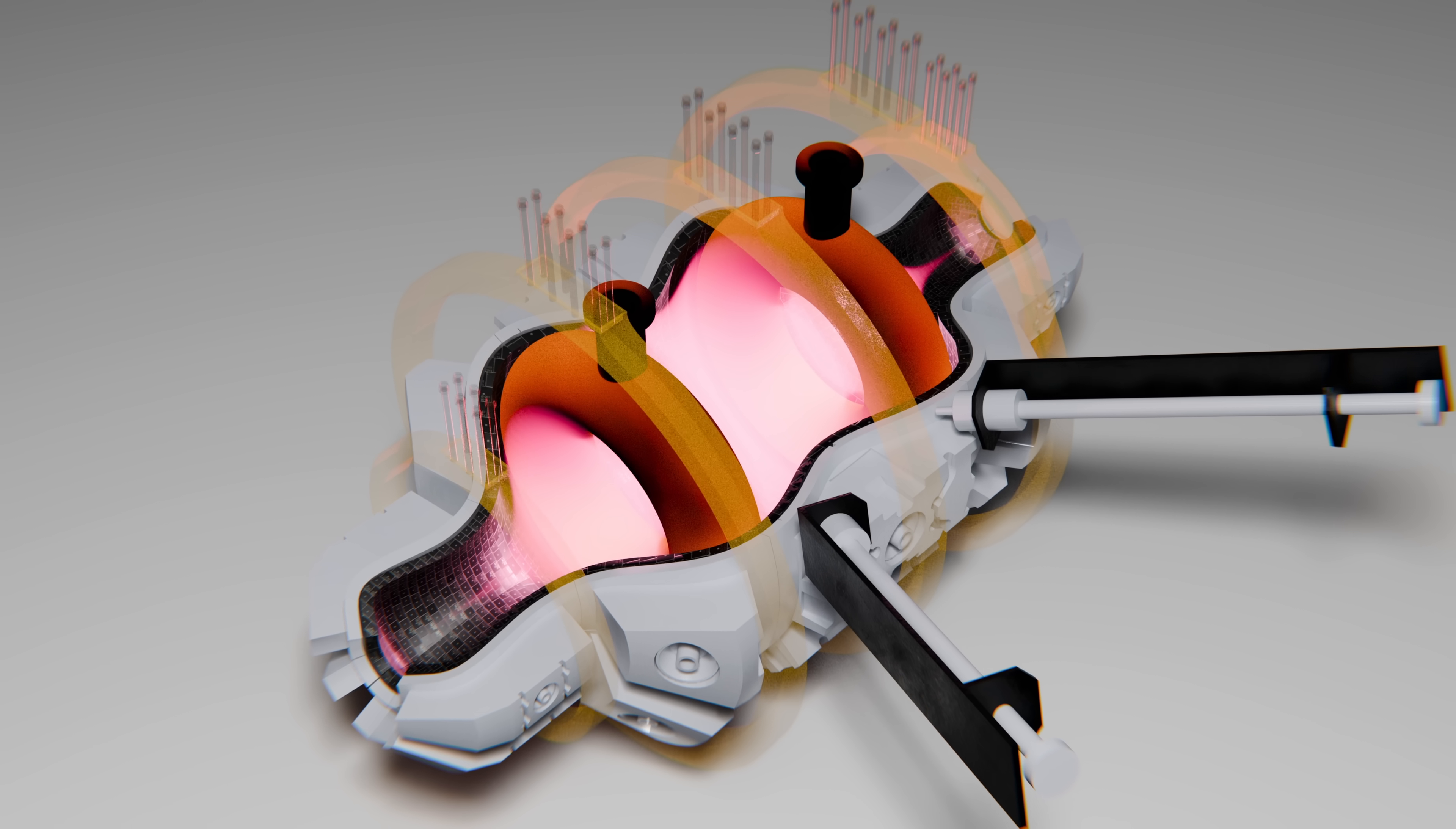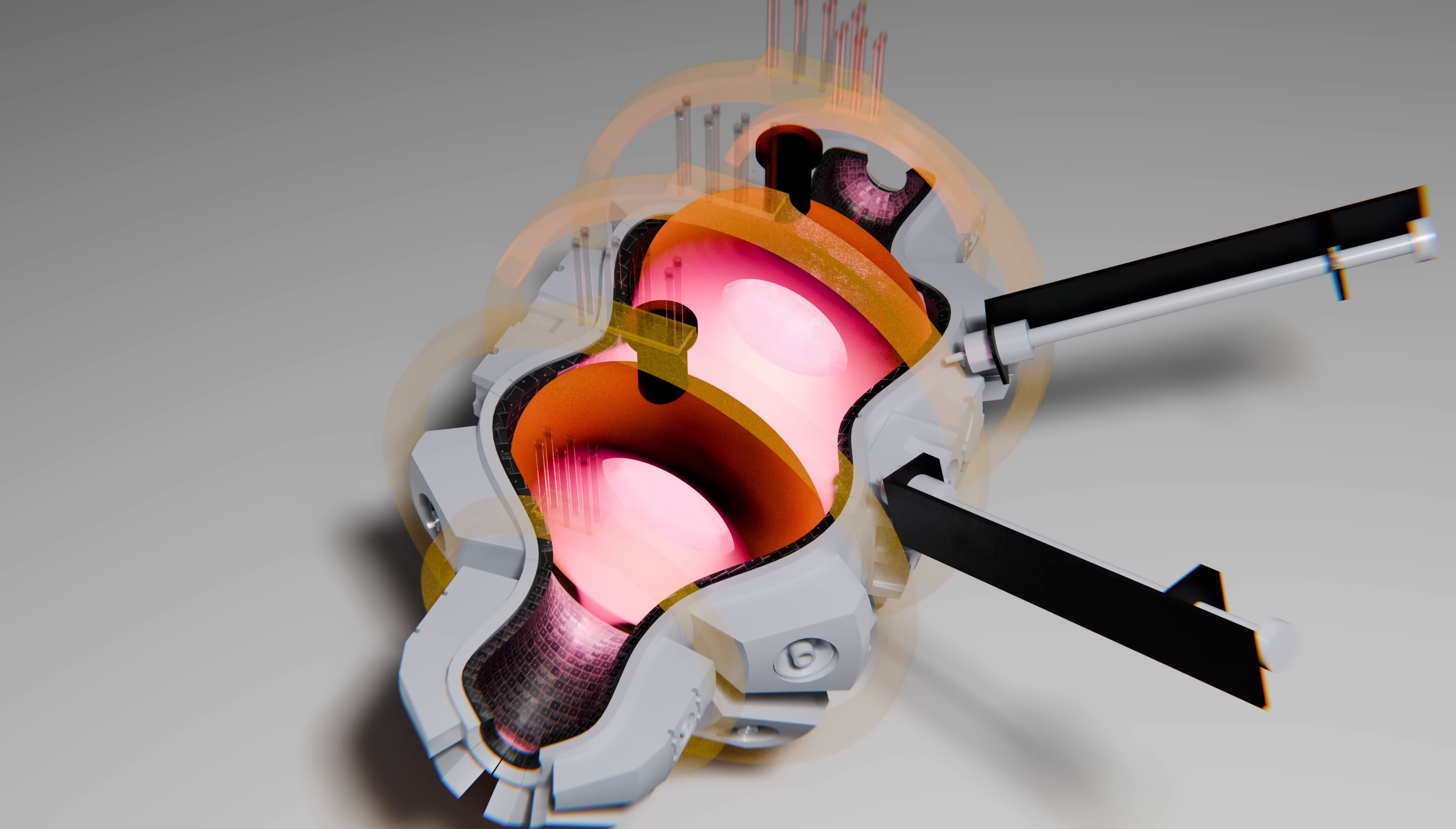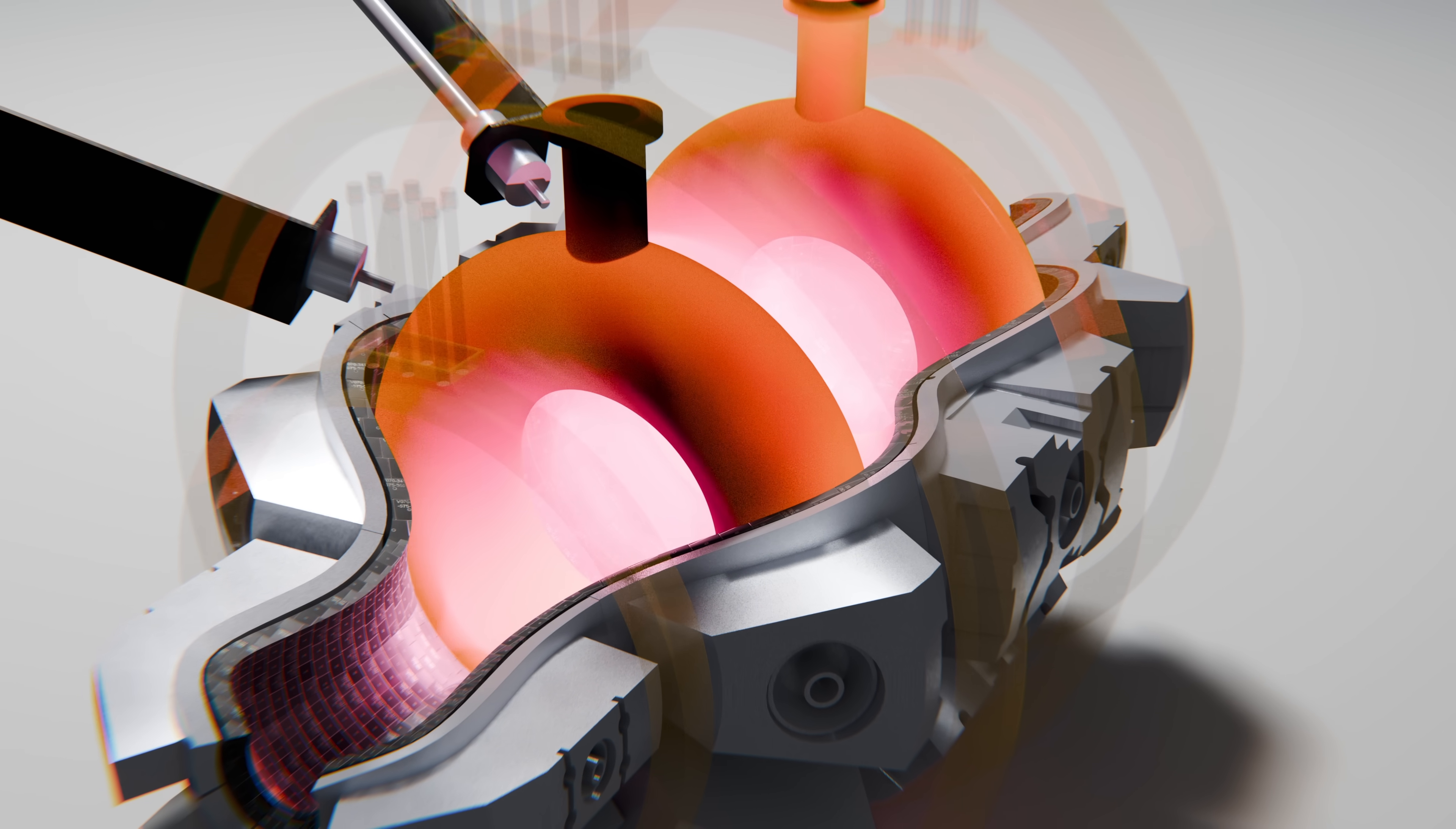To contain the super-hot plasma, the reactor used superconducting magnets. These generated powerful magnetic fields without overheating or consuming massive amounts of power. Since the CFR was designed for high beta plasma, the magnets could be placed closer to the reaction core, making the whole system more compact compared to traditional reactors.